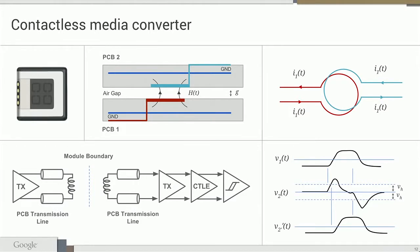That filtering would be very bad, except that we've put a hysteresis amplifier on the receiver. The signal must rise above the upper hysteresis threshold to be considered a one, and fall below the lower hysteresis threshold to be considered a zero. By that mechanism, the data is recovered and we're able to see the ones and zeros again.